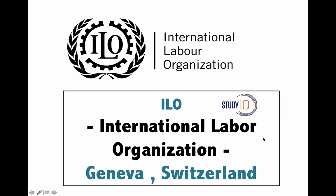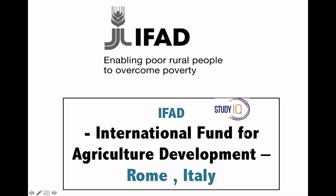Next is the International Labour Organization — ILO. It is very important and its headquarter is in Geneva, Switzerland. It is responsible for all labor-related issues between countries. Next is the International Fund for Agricultural Development — IFAD. Its headquarter is in Rome, Italy.